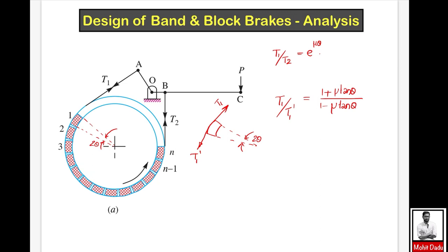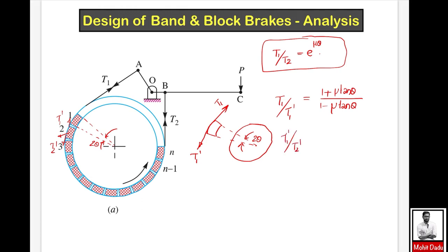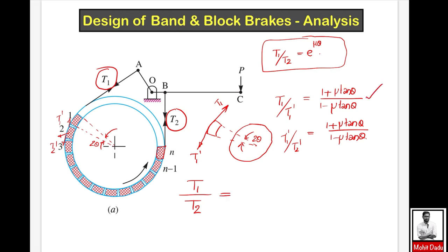Here, mu is the coefficient of friction, and 2 theta is the total angle subtended by a single block about the center of the drum. Note that in the previous band brake expression, theta was the angle of lap for the entire band about the drum — here it is different. In a similar way, for the second block the tight side tension is T1 dash and the slack side is T2 dash, so T1 dash by T2 dash equals the same expression (1 + mu tan theta) divided by (1 − mu tan theta). You can write the same for each subsequent block up to the last one. Finally, you need to evaluate the extreme tight side tension T1 divided by the overall slack side tension T2.